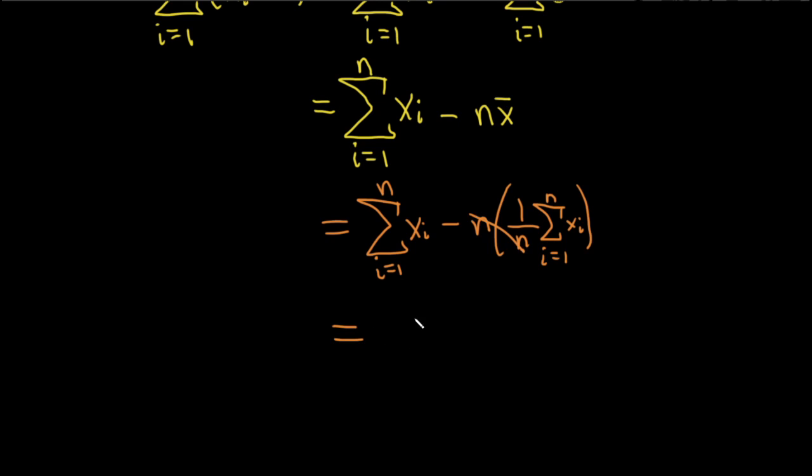Oops, I'm going to make it a little bit neater. So here, the sum as i runs from 1 to n of x sub i minus, and then we have the sum as i runs from 1 to n of x i, and that's equal to 0.